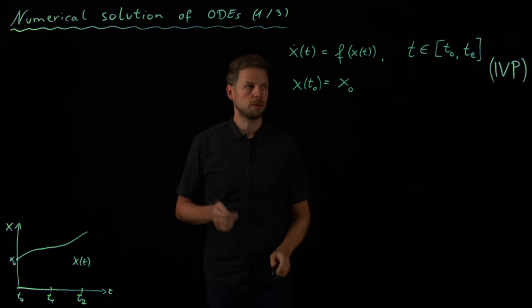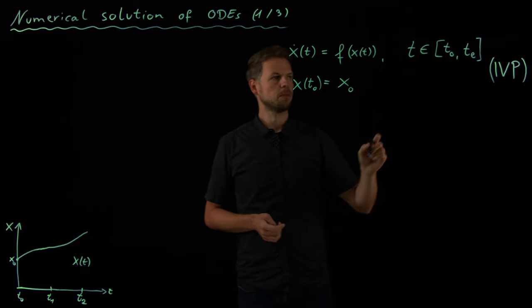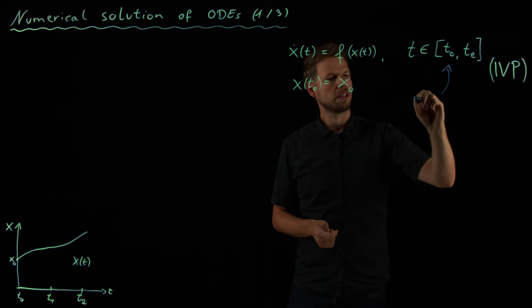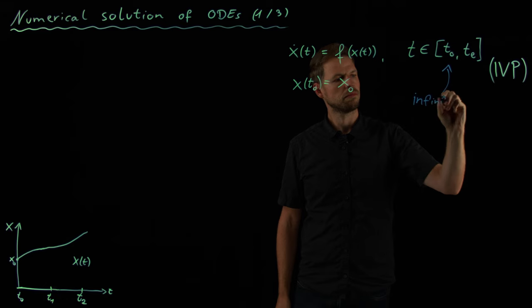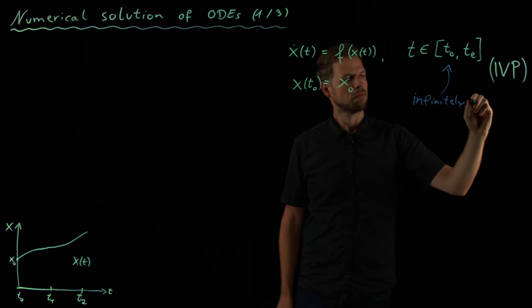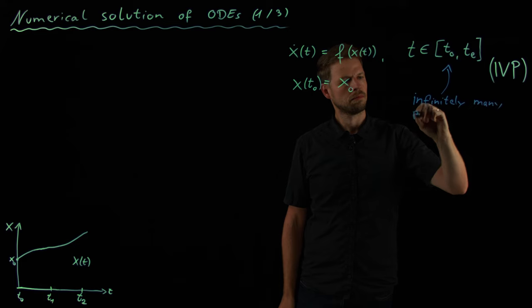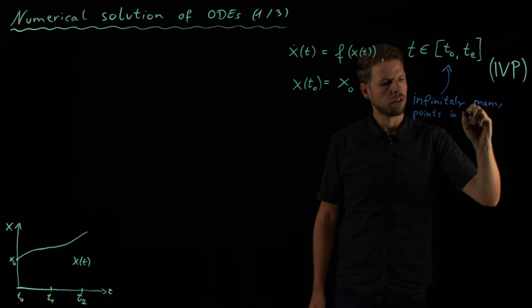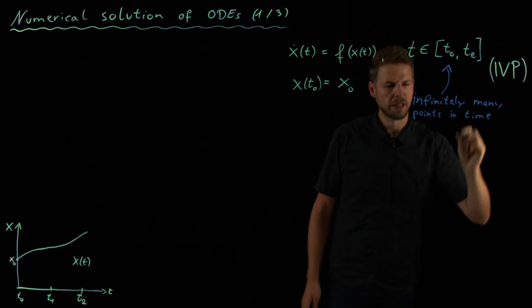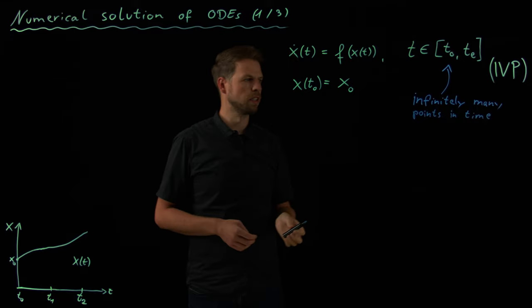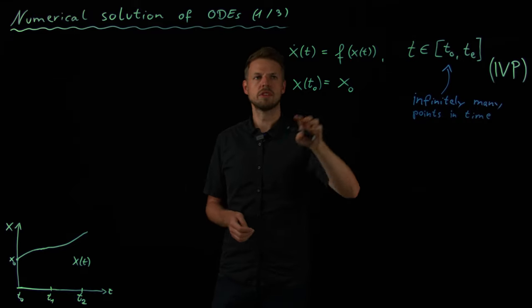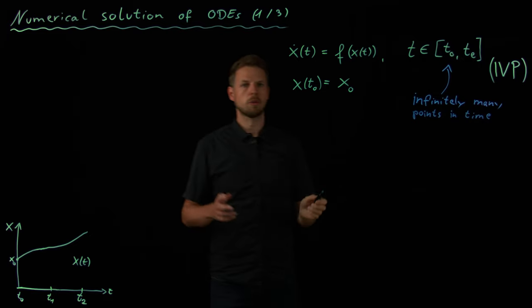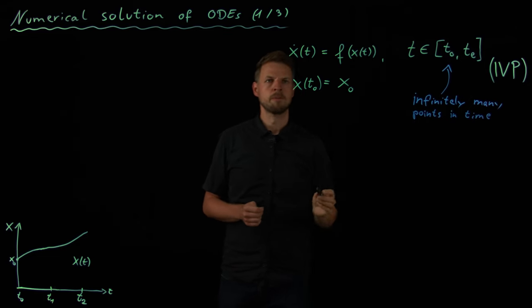So we have two problems. First of all, if you see that the dynamic system is defined on this interval, we see that in fact these are infinitely many points in time. You see it's a function, so it is defined on infinitely many points, which is problem one if you want to implement it in a computer. And problem number two is obviously we do not have a closed form solution for this type of system. So the question is now what can we do to solve this numerically in a computer?